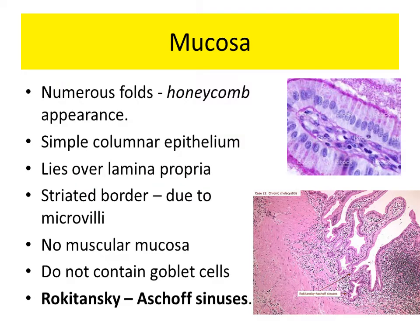The mucosa is thrown into numerous folds, which gives a honeycomb appearance. Functionally, this helps in the concentration of bile. The lining epithelium is simple columnar and lies over the lamina propria.